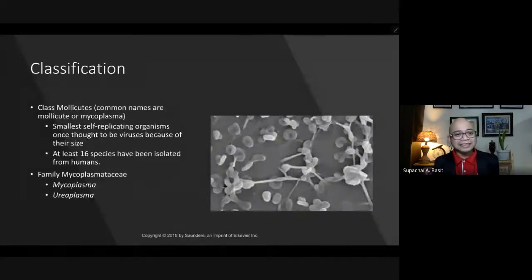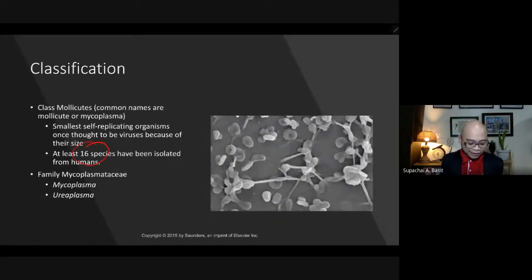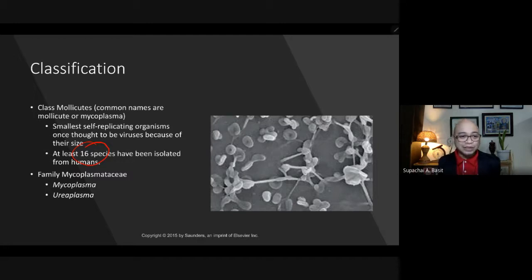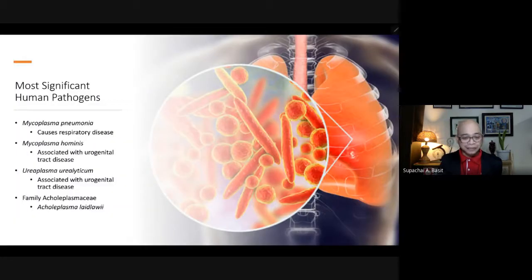At least 16 species have been identified or isolated. This particular class has one important family — the family Mycoplasmataceae — under which we have two important genera: mycoplasma and ureaplasma. For this lesson, we will be discussing mycoplasma and ureaplasma.